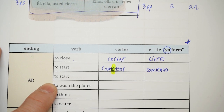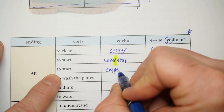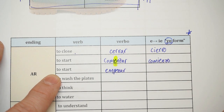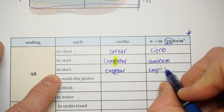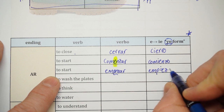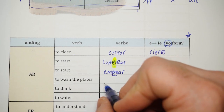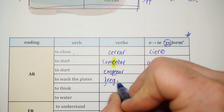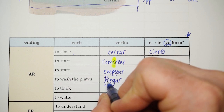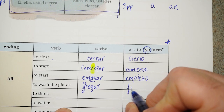We can say comenzar, but 'to start' is also empezar. Do the same — replace the e for ie, and then add the ending -o. Another example is 'to wash the plates,' which in Spanish is fregar. We apply the same e to ie change for the yo form.